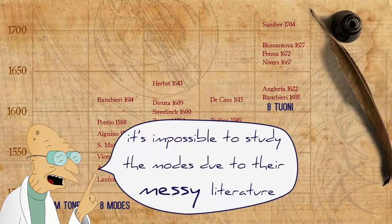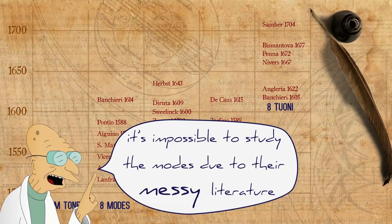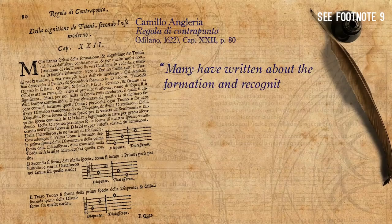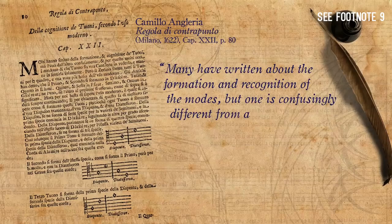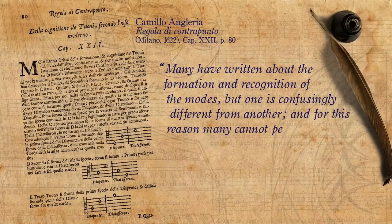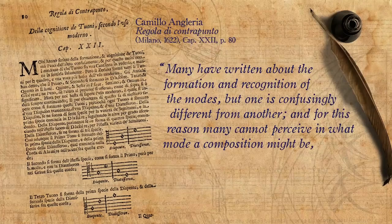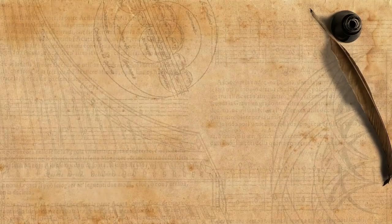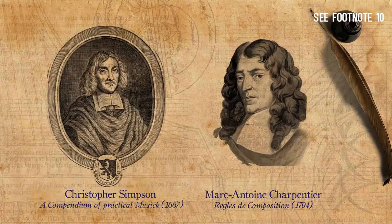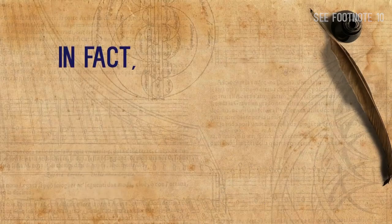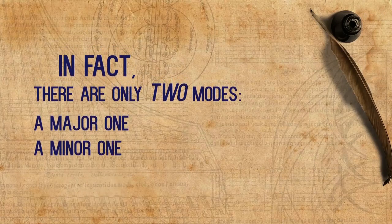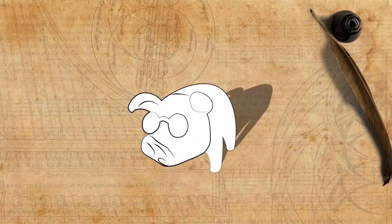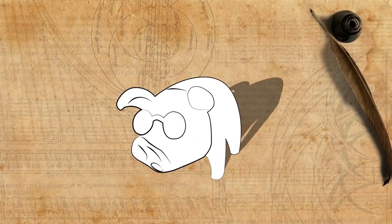During the 17th century, writers complained that it's impossible to study the modes due to their messy literature. Already in 1622, Camillo Angleria wrote: 'Many have written about the formation and recognition of the modes, but one is confusingly different from another, and for this reason many cannot perceive in what mode a composition might be when seeing it, and much less when only hearing it.' Towards the end of the 17th century, writers such as Christopher Simpson and the famous Marc-Antoine Charpentier suggested that in fact there are only two modes — a major one and a minor one. This is more or less the end of the Renaissance modal theories and the beginning of the major and minor era, that has continued on until today.